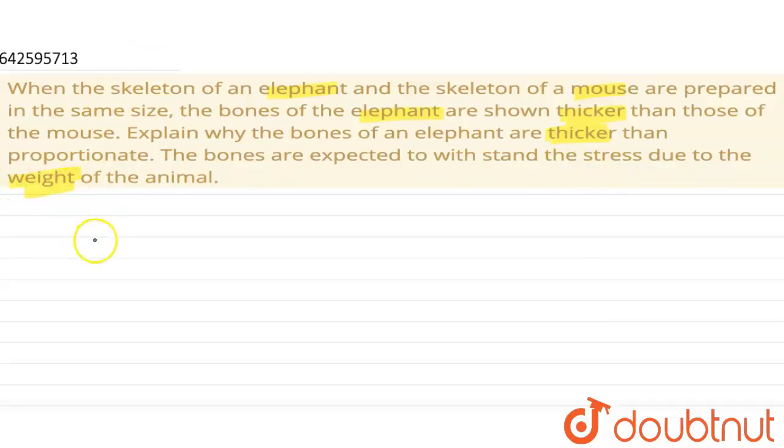In this case, we know that the weight of an elephant is greater than the weight of a mouse. But the material of bones is the same for both cases.